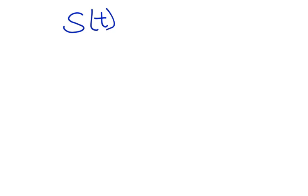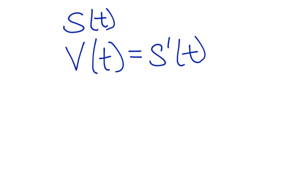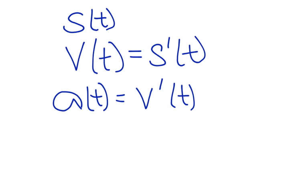If we wanted the velocity function, it was found by taking the derivative of the position function. We went through why that is last year — we set up the derivative and look at the instantaneous rate of change of the position function with respect to time, which works out to be the velocity. Then we had our acceleration function A(T), which is the first derivative of the velocity function or the second derivative of the position function.